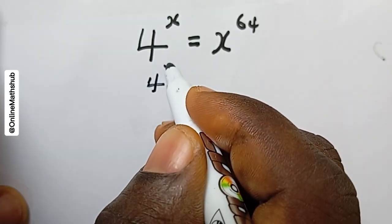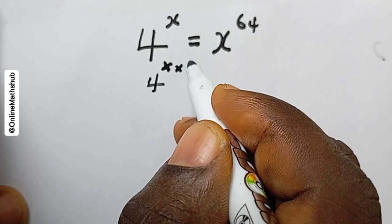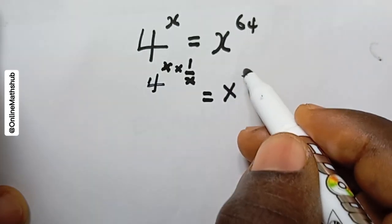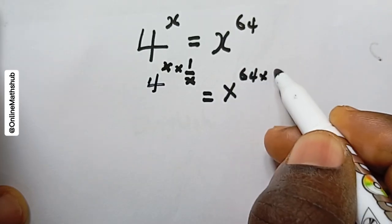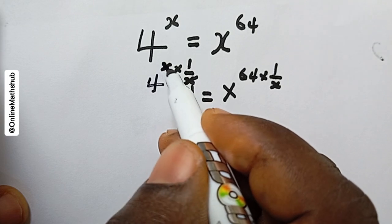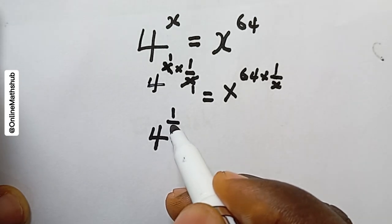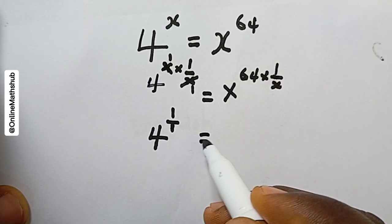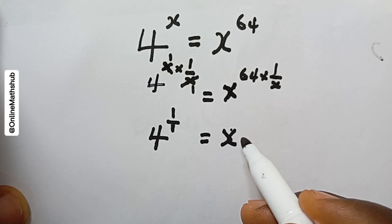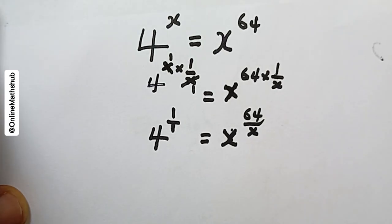I can do that by raising both sides to the power of 1/x. So I multiply this side by 1/x and also this side, since we are dealing with an equation. That gives us 4^(1/x) on the left, and on the right x^64 raised to 1/x, which simplifies to x^(64/x).